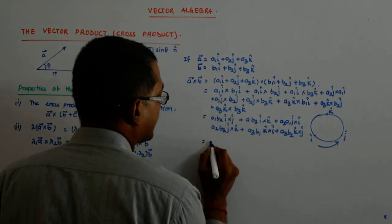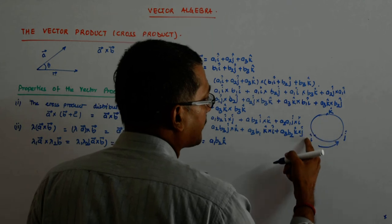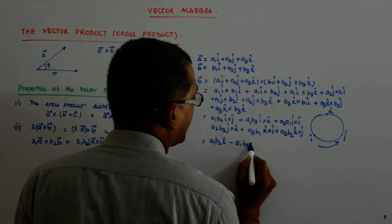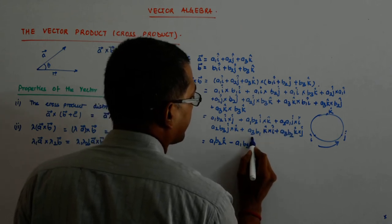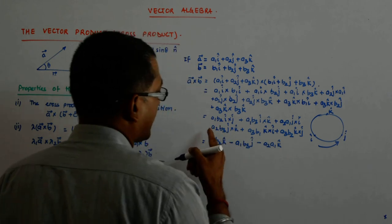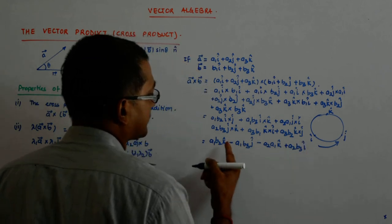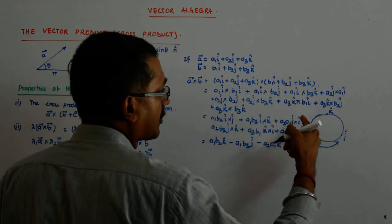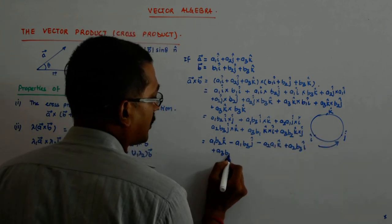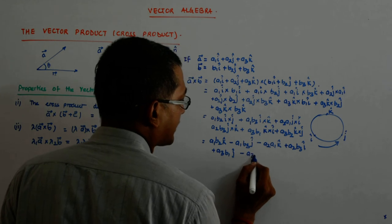Now substituting: i cross j = k, so we get a1 b2 k-hat. i cross k = minus j, so minus a1 b3 j-hat. j cross i = minus k, so minus a2 b1 k-hat. j cross k = i, so plus a2 b3 i-hat. k cross i = j, so plus a3 b1 j-hat. k cross j = minus i, so minus a3 b2 i-hat.